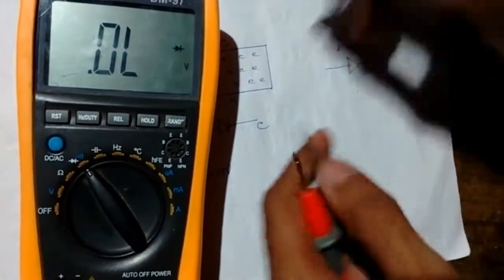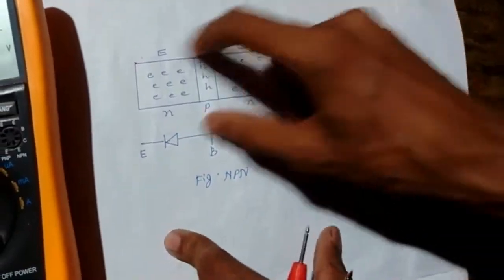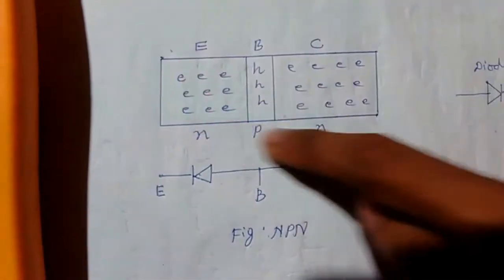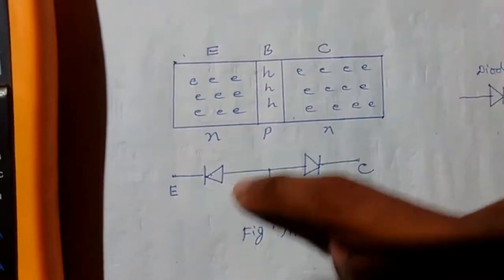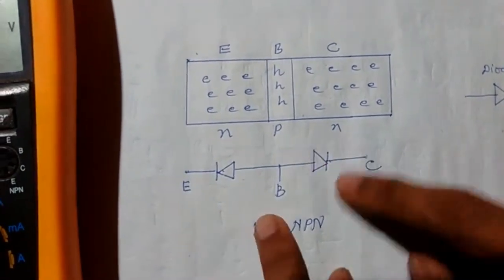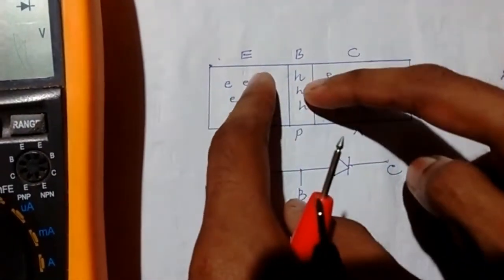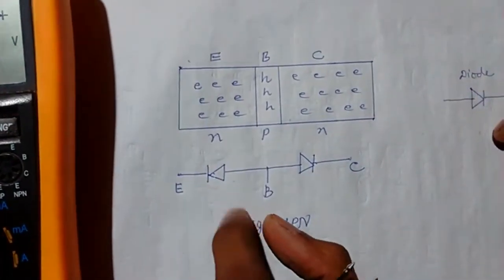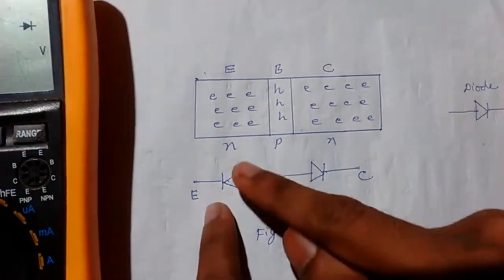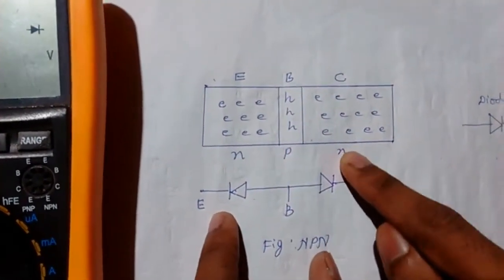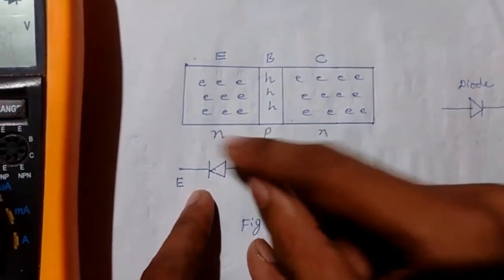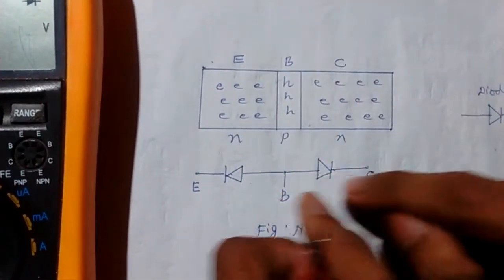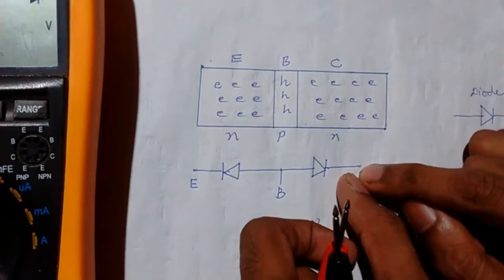Now let's see the configuration of a transistor. An NPN transistor actually acts as two diodes. We can think of it like this: this is N, this is P, and this is N. So this is a PN diode — this side is positive, this side is negative — and again this side is positive and this side is negative.